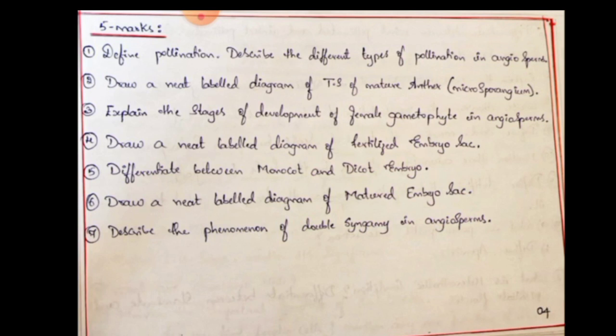Draw a neat labelled diagram of a T.S. of matured anther — matured anther and young anther diagrams. Next: Explain the stages of development of the female gametophyte in angiosperms. This is an expected question because it involves an identification process. You can also draw a neat labelled diagram of the fertilized embryo sac — in the final paper, this 5-mark question appeared. Differentiate between monocot and dicot embryo.